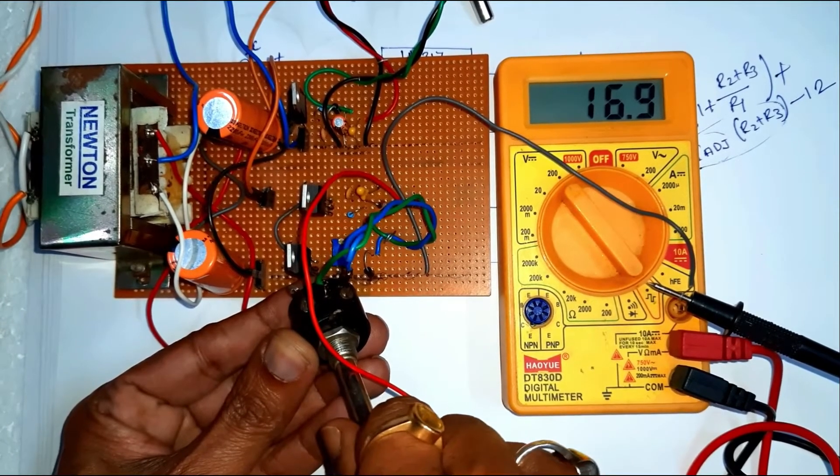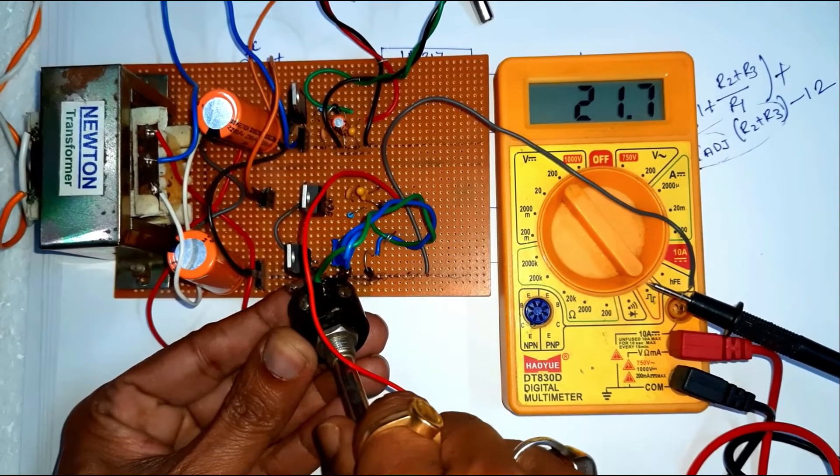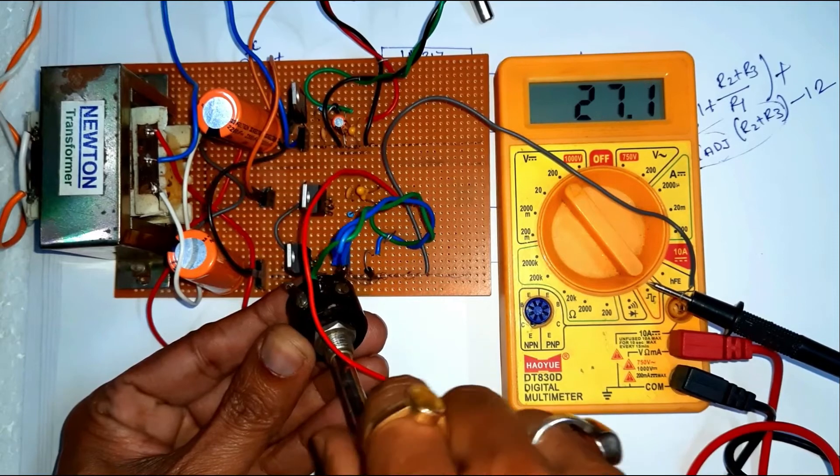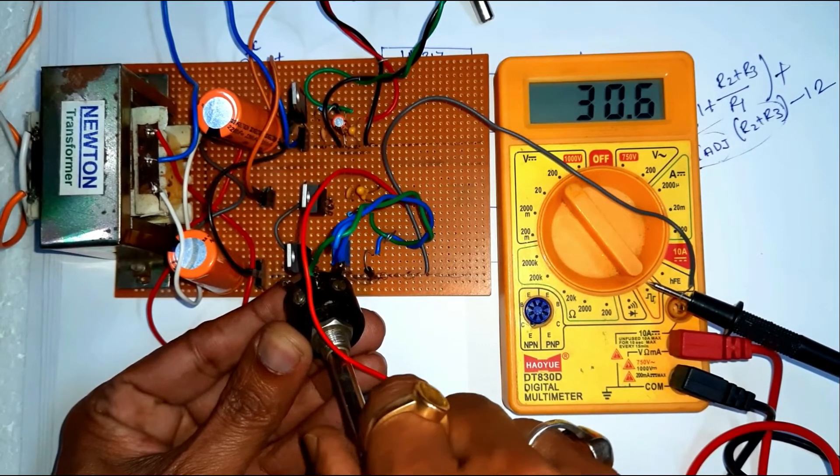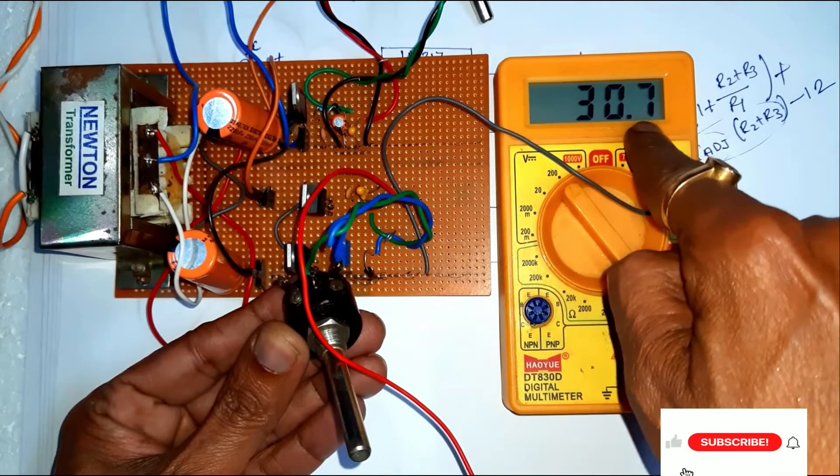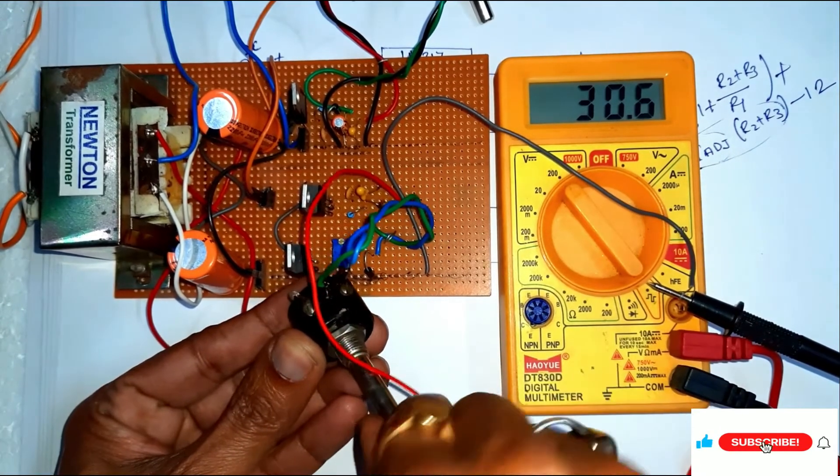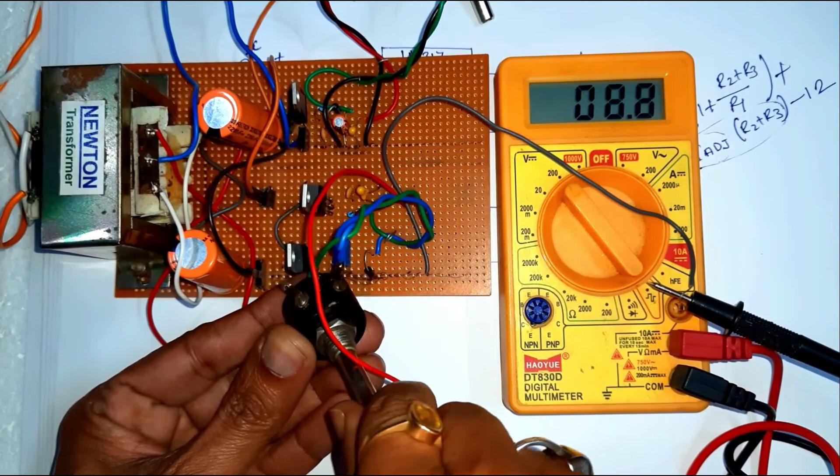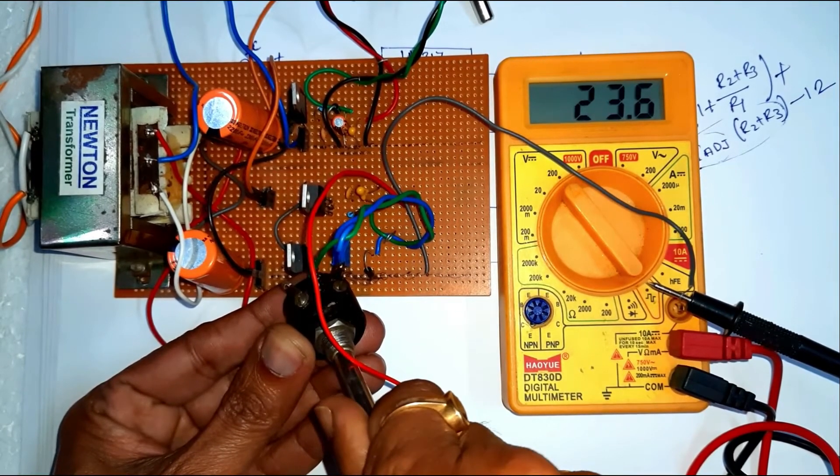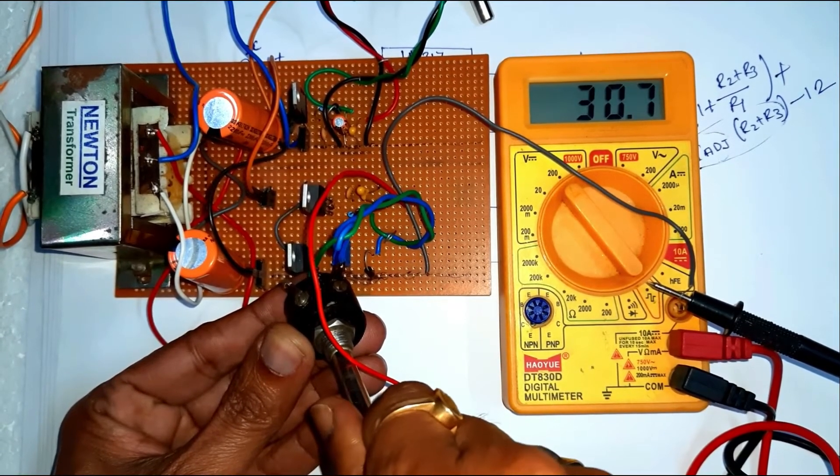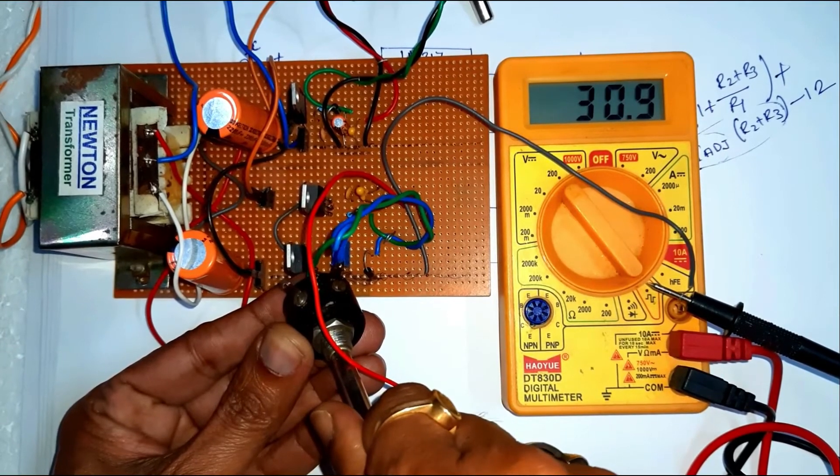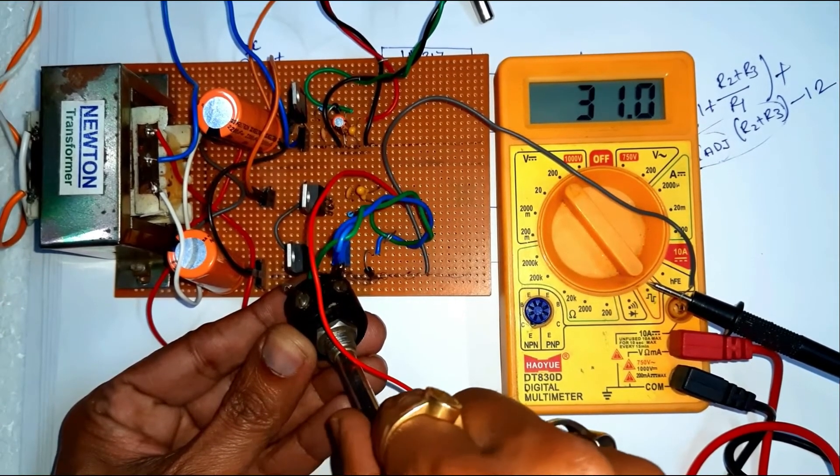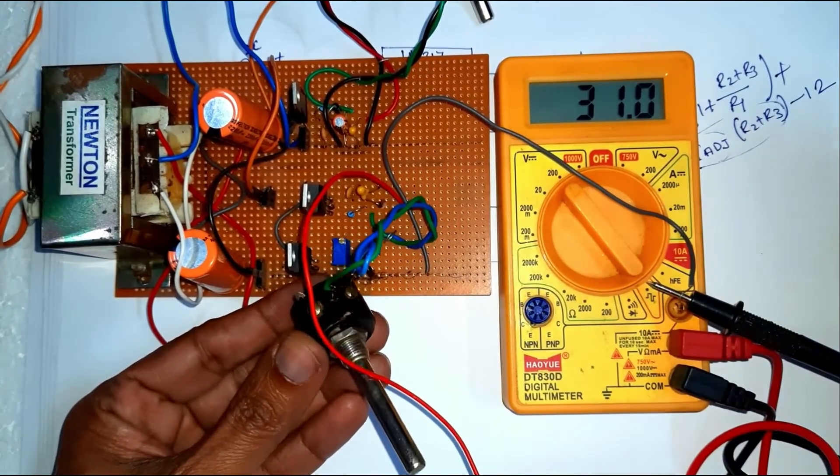Now, change the position of the R2 resistance and this is the maximum. So, minimum 0 volt to maximum 30 volt. So, this is the no load condition.